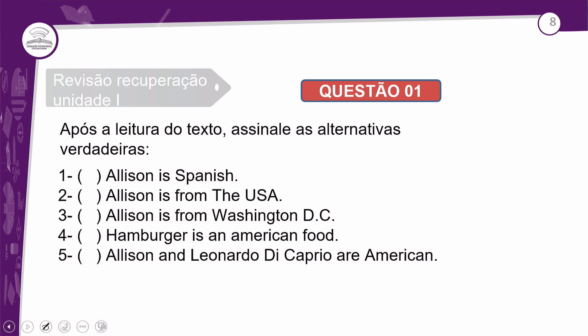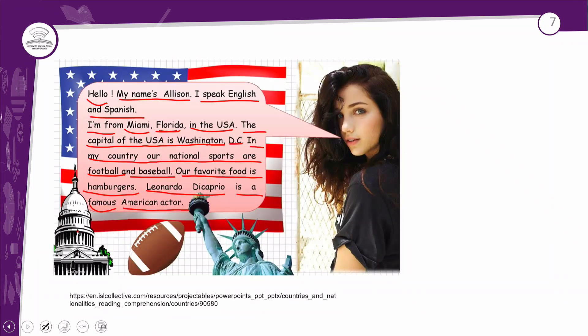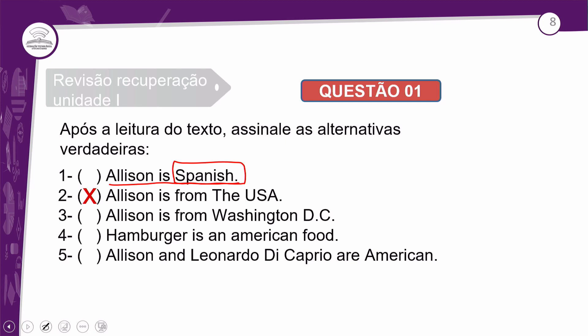Desta vez, eu fui ao texto e depois fiz as alternativas — geralmente a gente lê primeiro as alternativas. Após a leitura do texto, assinale as alternativas verdadeiras. Na primeira: 'Alison is Spanish' — será que ela é espanhola? De acordo com a leitura, não foi isso que vimos. Na segunda: 'Alison is from the USA' — ela fala inglês e é de Miami, na Flórida, que fica nos Estados Unidos. Então, obviamente, essa informação está correta.